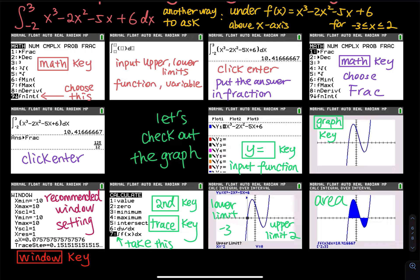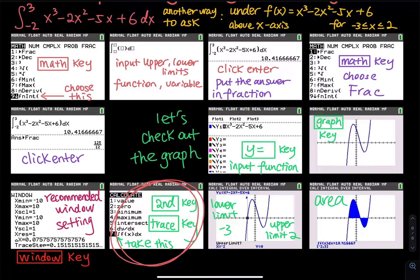To calculate the area under the curve, hit the second key and then hit the trace key. Above the trace key there is a CALC button. Second plus Trace means you are calculating something on the graph.